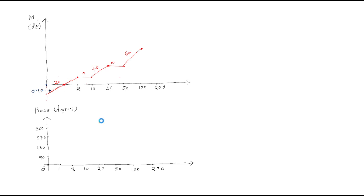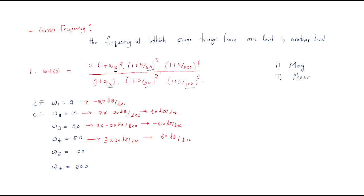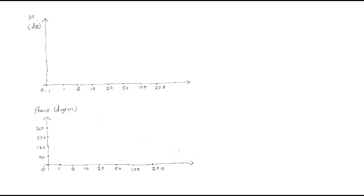At corner frequency 100, we have three poles again, so 3 × minus 20 = minus 60 dB per decade is added. The plus 60 dB and minus 60 dB cancel and become neutral — the slope returns to 0 dB per decade again.